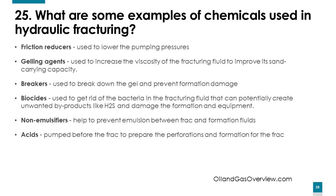What are some examples of chemicals used in hydraulic fracturing? Friction reducers are used to lower pumping pressures. Gel agents are used to increase the viscosity of fracturing fluid to improve its sand-carrying capacity. Breakers are used to break down the gel and prevent formation damage. Biocides are used to eliminate bacteria in the fracturing fluid that can create unwanted byproducts like H2S and damage formation and equipment. Non-emulsifiers help prevent emulsions between frac fluid and formation fluids. Acids are pumped before the frac to prepare the perforations and formation for the frac.